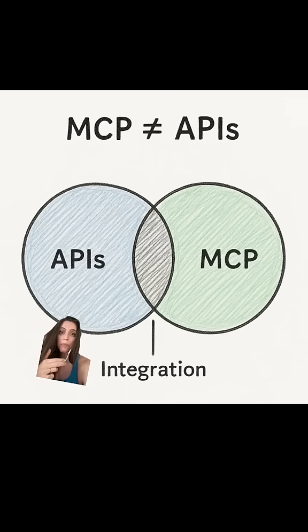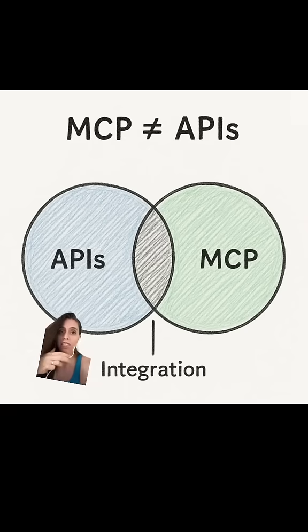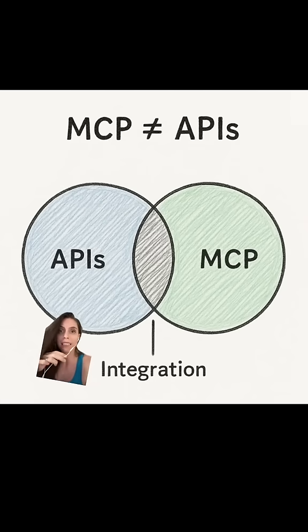LLMs treat text as code — they follow whatever instructions you feed them. MCP servers inject text into that execution context: what tools exist, what the descriptions for those tools are, things like that. That text can control LLM behavior.